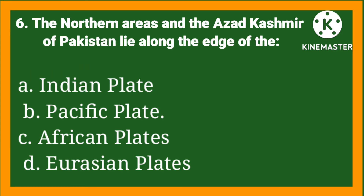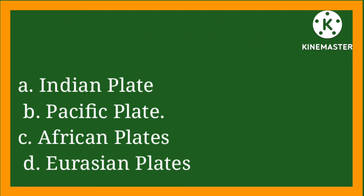MCQ number six: Northern areas and Azad Kashmir of Pakistan lie along the edge of the — option A: Indian plate, option B: Pacific plates, option C: African plates, option D: Russian plates. The right option is A, Indian plate.